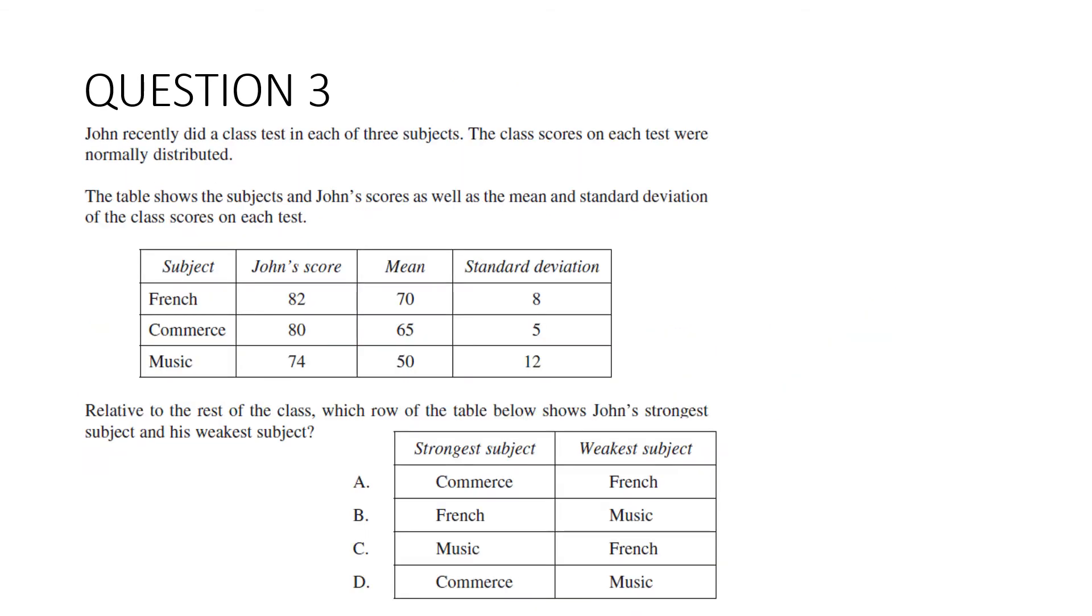Question three: John recently did a class test in each of three subjects. The class scores on each test were normally distributed. The table shows the subjects and John's scores as well as the mean and standard deviation of the class scores on each test. Relative to the rest of the class, which row of the table shows John's strongest subject and his weakest subject? So we want to standardize these. The formula we're going to use is our z-score equals our score x, take away the mean, divided by the standard deviation.